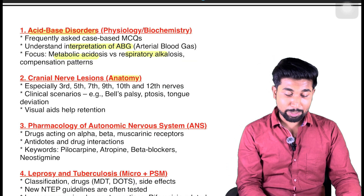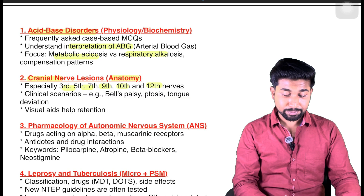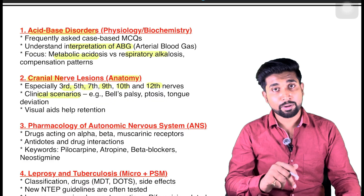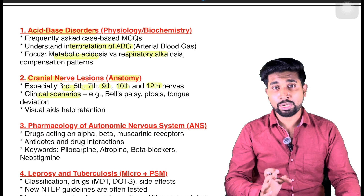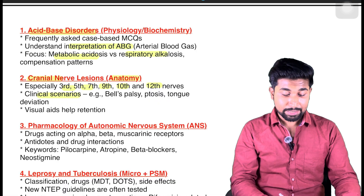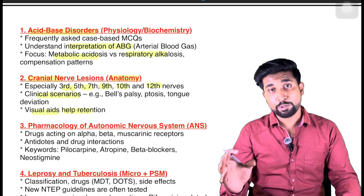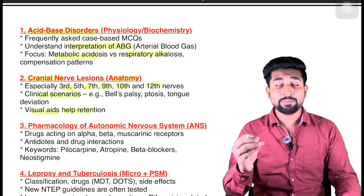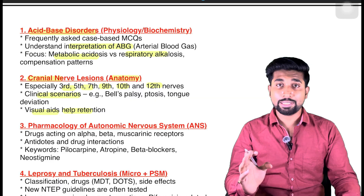The second topic is from anatomy: cranial nerve lesions, especially the 3rd, 5th, 7th, 9th, 10th and 12th nerves. Bell's palsy is a very hot topic — the previous January exam had 2 questions from it. Image-based questions will come. You have to understand ptosis, tongue deviation, and differentiate between upper motor neuron and lower motor neuron lesions. This topic also interrelates with ENT. Looking at images repeatedly will help you retain them and save time in the exam hall.